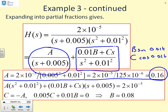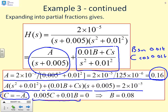Now because the other partial fraction bit is a quadratic, it's easier to multiply out longhand in order to find B and C. So that's what I've done. You can see here I've multiplied out longhand, and I've got A times (s²+0.01²) plus (0.01B+Cs) times (s+0.005) equals 2 times 10 to the minus 5. I can equate coefficients of s² to notice that C equals minus A. So that's minus 0.16. And then I can equate coefficients of s to get this expression here, which gives me that B equals 0.08.